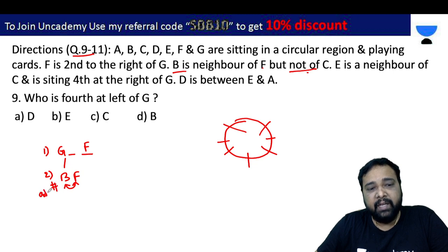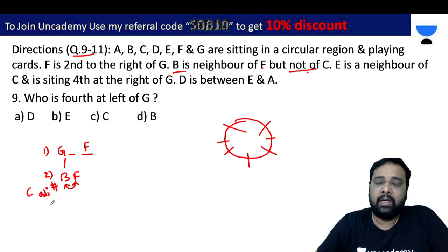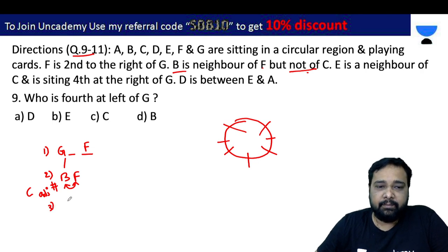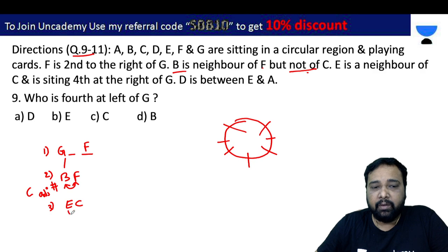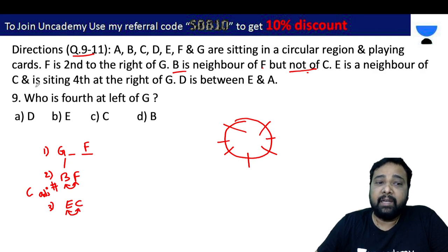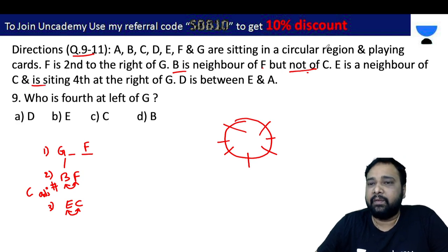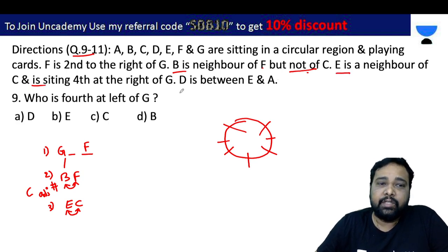B is not adjacent to C. E is the neighbor of C — so E and C are seated next to each other (EC or CE). E is the fourth to the right of G.